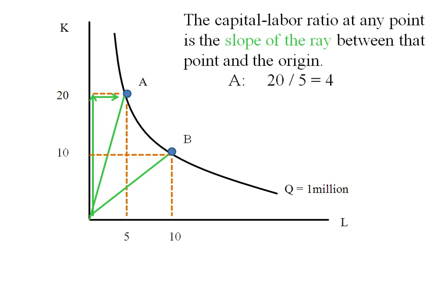At B I can draw a ray between the origin and B, and the slope of that ray is rise over run, or 10 over 10, which equals 1. So the capital-labor ratio at point B is 1.